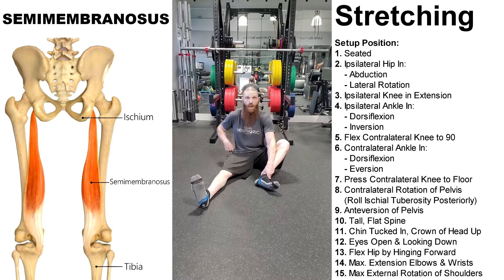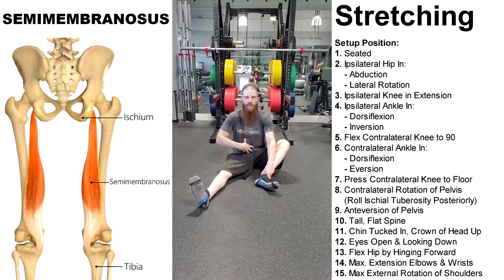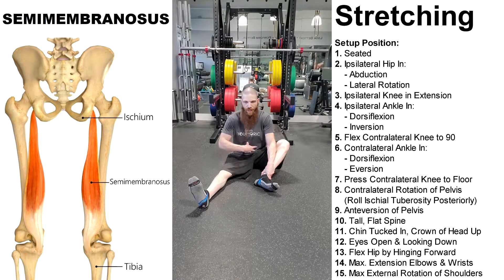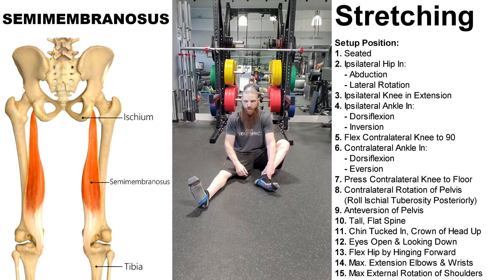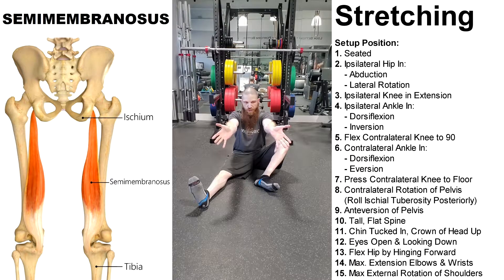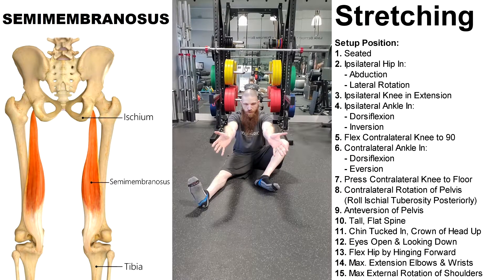We want to go into contralateral rotation of the pelvis by moving the ischial tuberosity back behind us, then maintain anteversion of the pelvis without going into extension of the lumbar spine by rolling our umbilicus forward. Go into flexion of the hip by pinching forward at the hips. Maintain a nice tall spine — flat lumbar, flat thoracic, chin tucked, crown of head up, eyes looking forward to put the dura mater under tension. Arms with maximum extension of elbow and wrist, maximum external rotation of the shoulders, palms projected forward. Move as far forward as possible without losing the retroversion bridge into the pelvis. This is the myofascial stretching exercise for the semimembranosus muscle.